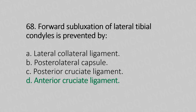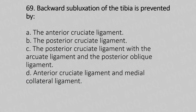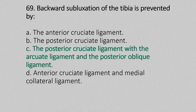Now let's move to quiz number 69. Backward subluxation of the tibia is prevented by: Option A, The anterior cruciate ligament; Option B, The posterior cruciate ligament; Option C, The posterior cruciate ligament with the arcuate ligament and the posterior oblique ligament; Option D, The anterior cruciate ligament and the medial collateral ligament. And the answer is Option C, The posterior cruciate ligament with the arcuate ligament and the posterior oblique ligament.